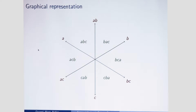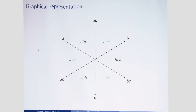I will represent the game with the following graphical representation. In green I have the six types of voters that may exist — a type is a cardinal ordering, so ABC means the voter prefers A to B to C. For each type I have two possibilities: either vote for A or vote for AB. Let's consider a specific example profile: 40% of voters of one type, 15% of another, and 45% of a third.